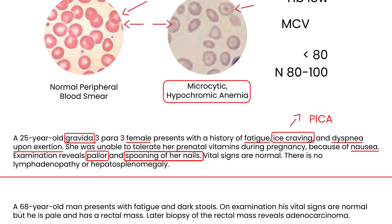Second vignette: A 68-year-old man presents with fatigue and dark stools. Examination shows normal vital signs, pallor, and a rectal mass. Biopsy reveals adenocarcinoma. This illustrates how in men, the most common cause of iron deficiency anemia is GI tract pathology — bleeding in the colon from cancer — where blood in the stool can appear dark, especially from lower GI tract pathology.